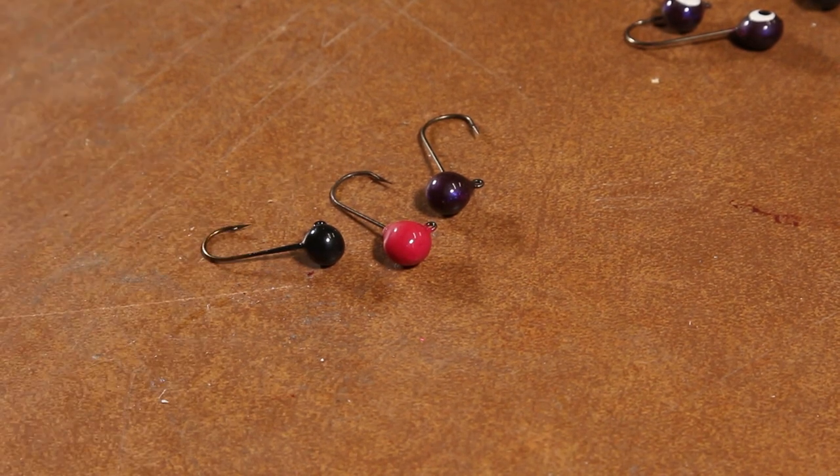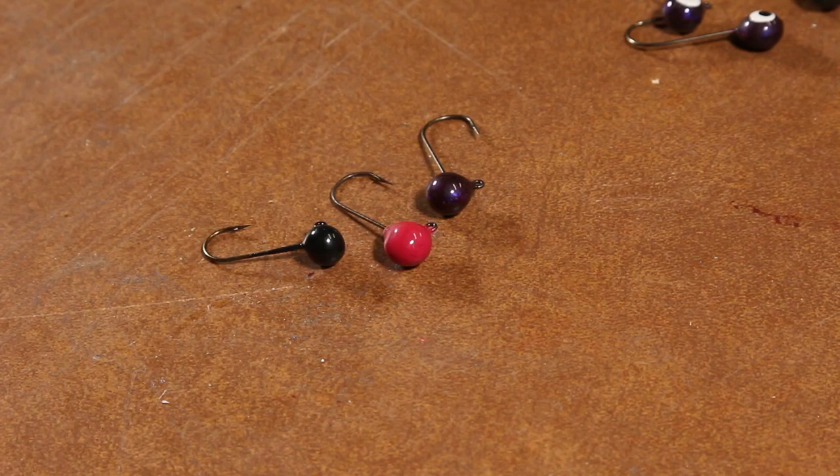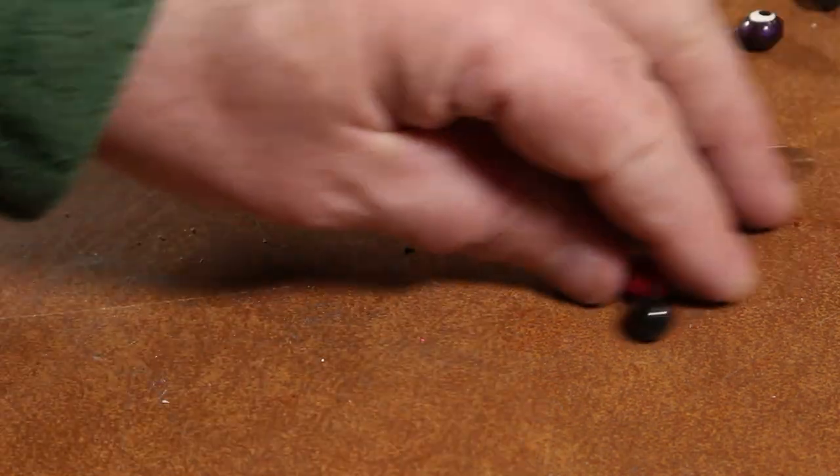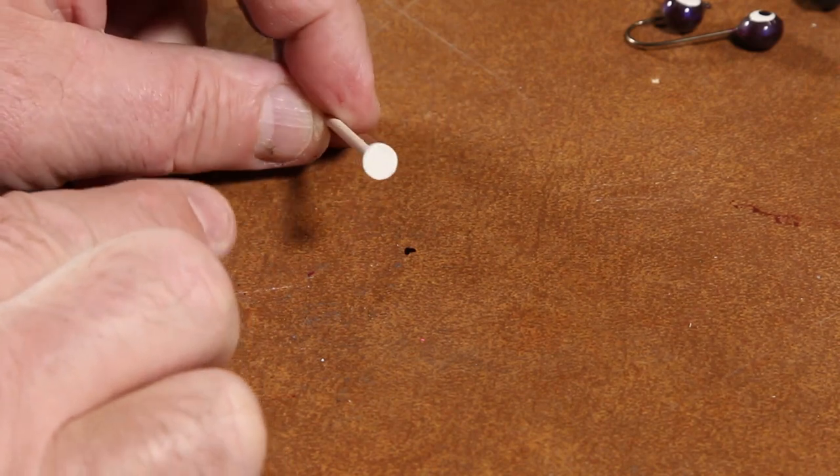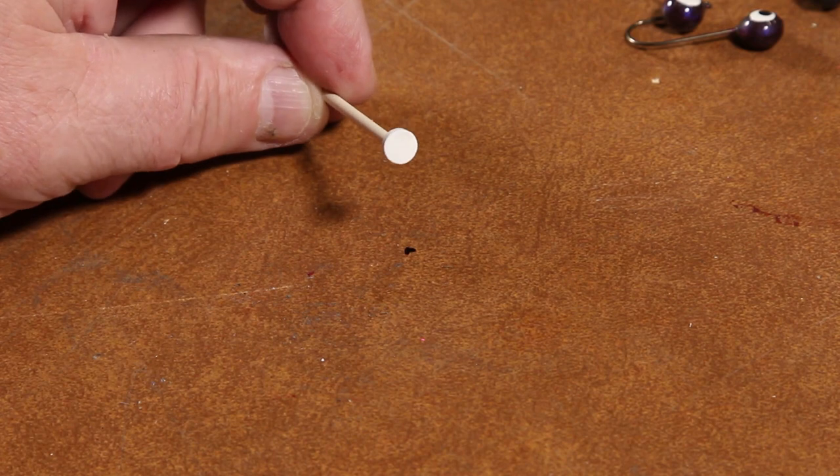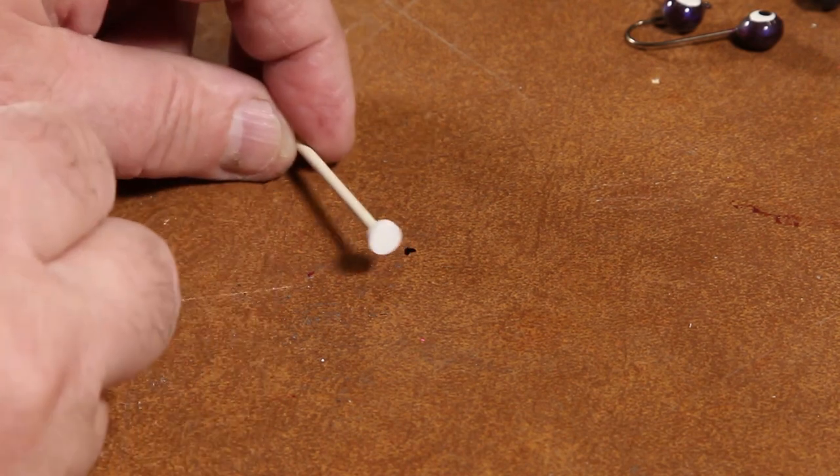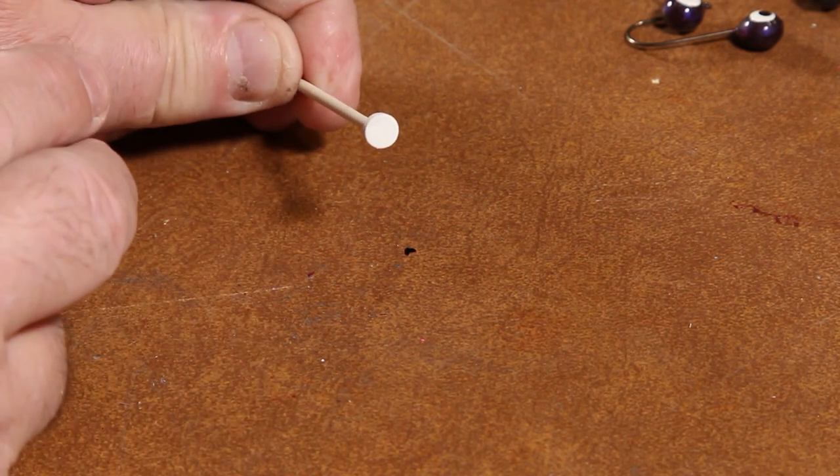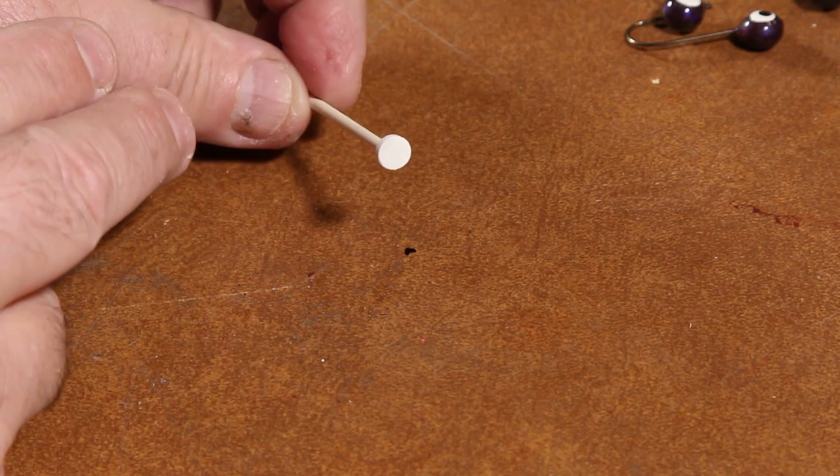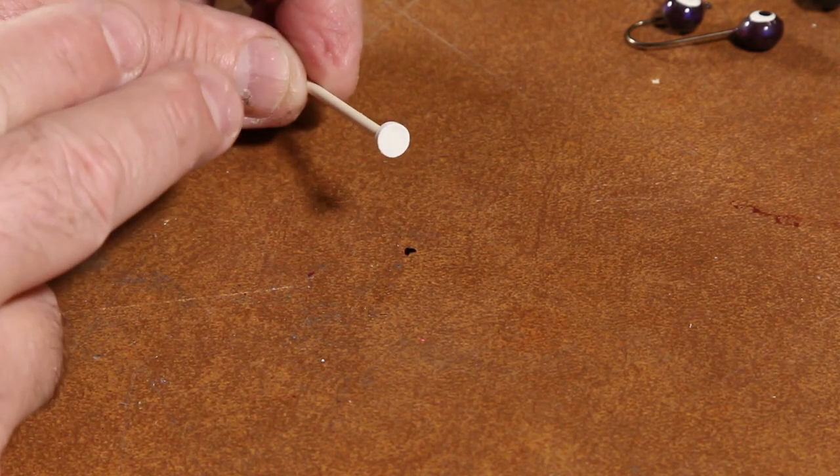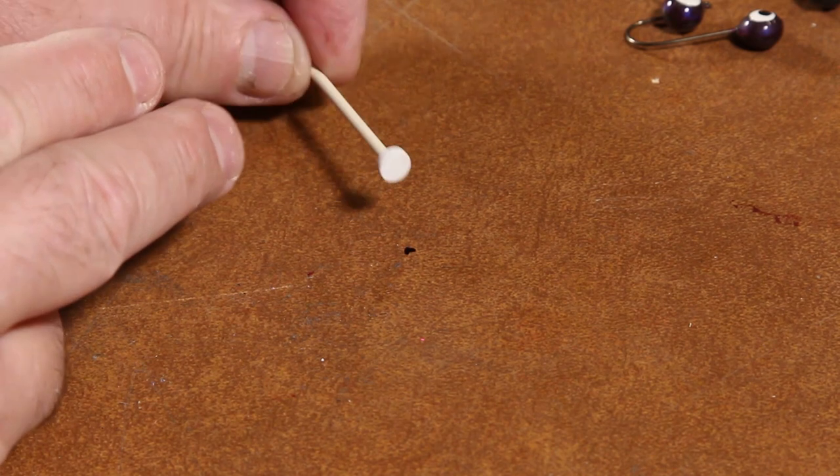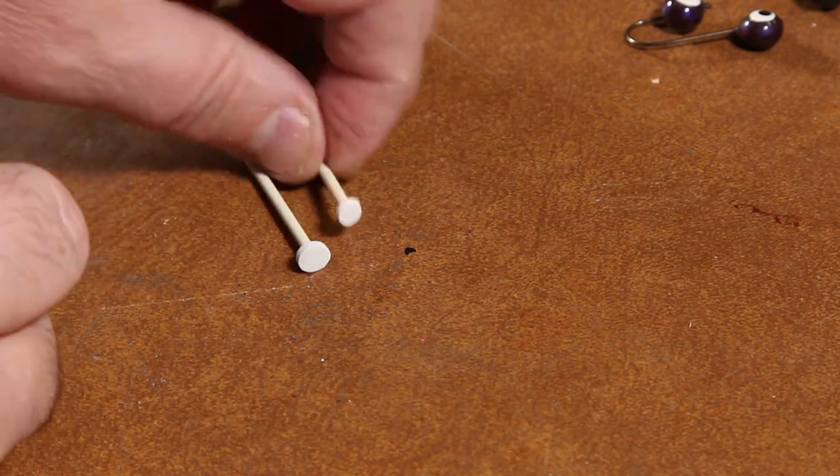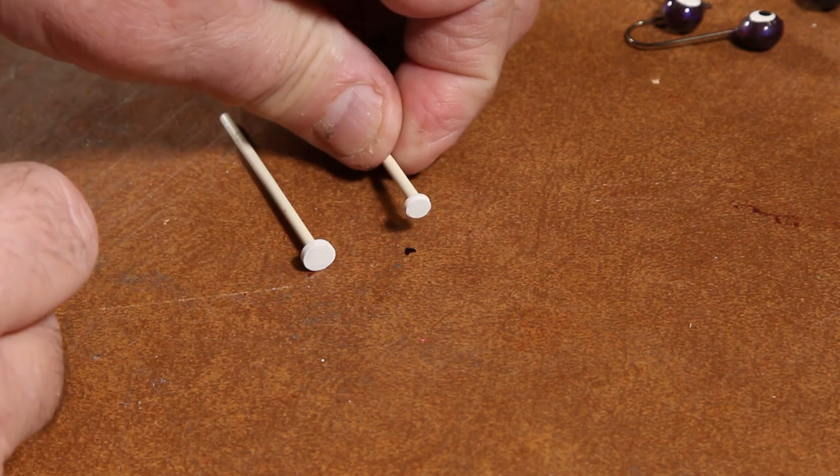The key to this is repeatability. So what I have figured out how to make are some little stamps that I can stamp eyes on with. Some people use nails or small nails or different types of wood they've whittled down. These you can make in really particular sizes for different sizes of heads and jigs and different effects. I make them in several different sizes and I'm going to show you how I do these.